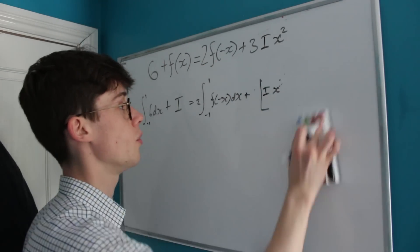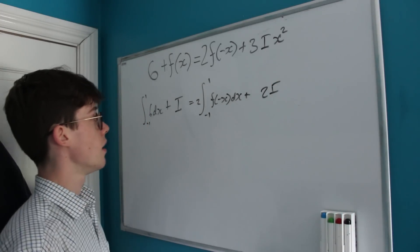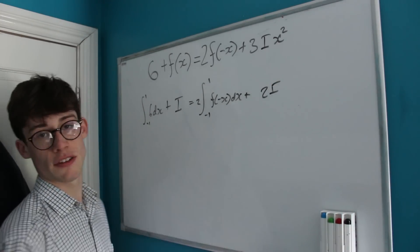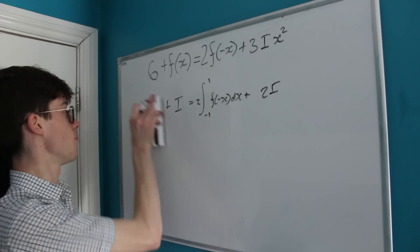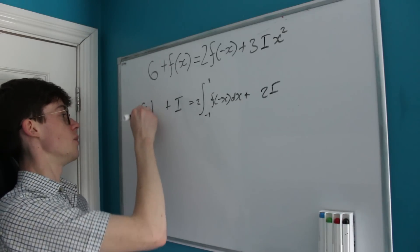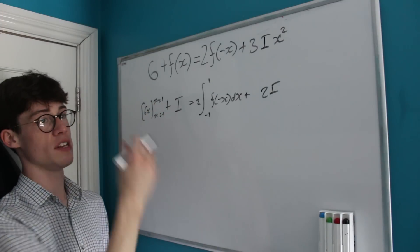This integral from -1 to 1 of 6 is of course going to become 6x evaluated between the bounds of 1 and -1, which is going to be 6 minus (-6), which is 12.